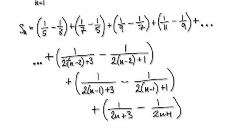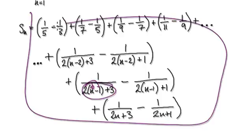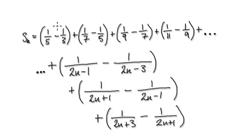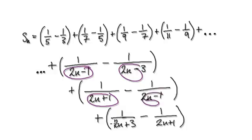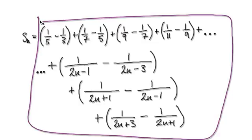Now tidy this up — multiply out each bracket and add the constant. This whole thing, when tidied up, becomes much neater. So the full Sn sum gives us a simplified expression.